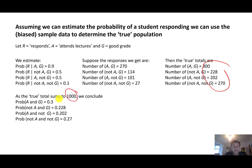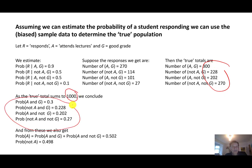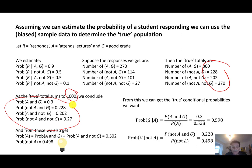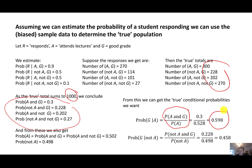From these, we can calculate the true conditional probabilities. The probability of attending lectures is just over 0.5, and the probability of not attending is just under 0.5. We can then calculate the true conditional probabilities: the probability of a good grade given attending lectures (P(G|A)) is close to 0.6, and the probability of a good grade given not attending lectures (P(G|not A)) is about 0.46.